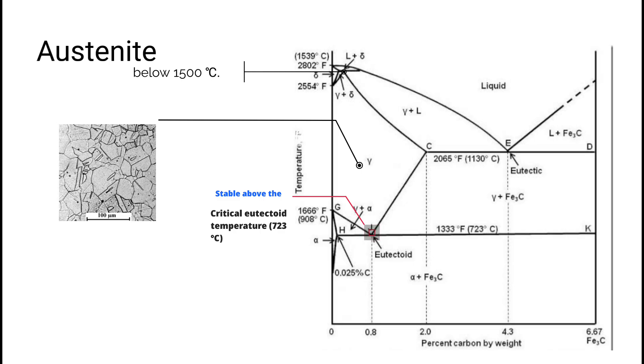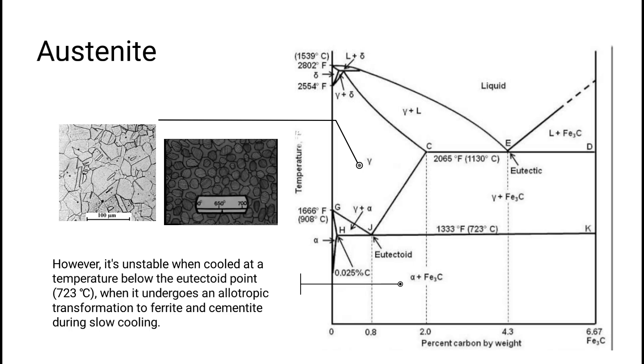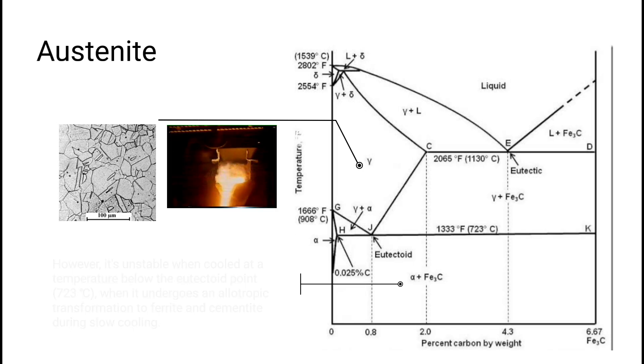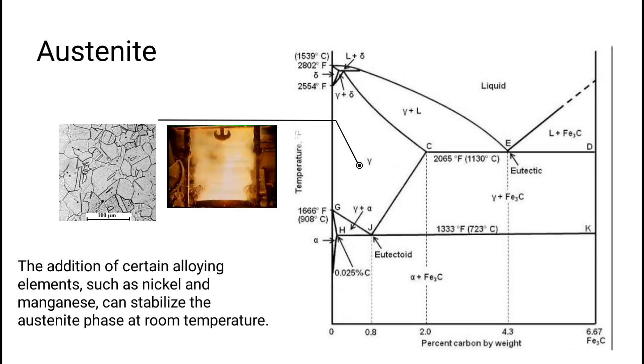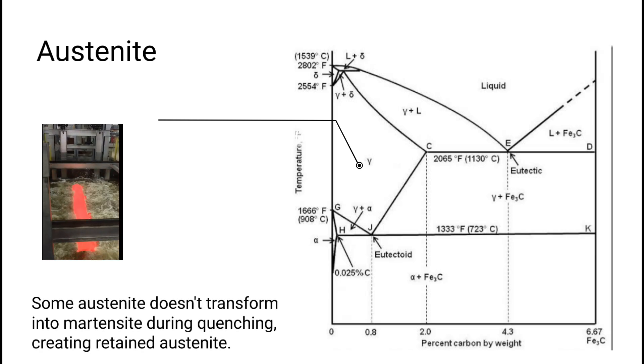Austenite in steel is generally stable above the critical eutectoid temperature, 723 degrees Celsius, and below 1500 degrees Celsius depending on carbon content. However, it's unstable when cooled at temperature below the eutectoid point, 723 degrees Celsius, when it undergoes an anatropic transformation to ferrite and cementite during slow cooling. The addition of certain alloying elements such as nickel and manganese can stabilize the austenite phase at room temperature.